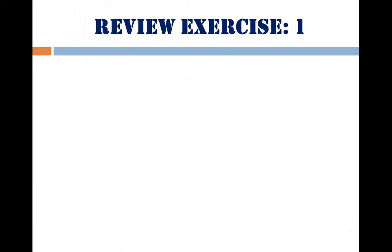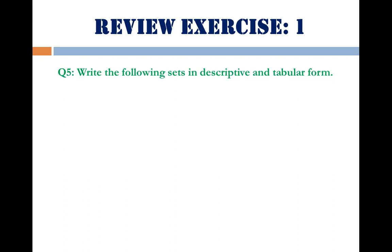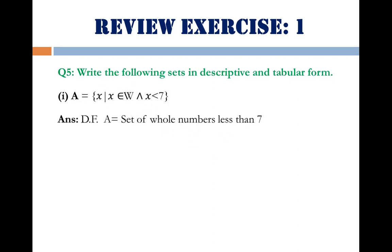We proceed to question number 5. The statement is: write the following sets in descriptive and tabular form. A set given in set builder form must be converted to both descriptive form (DF) and tabular form (TF). For part 1, the descriptive form is: set of whole numbers less than 7. The tabular form is: {0, 1, 2, 3, 4, 5, 6}.